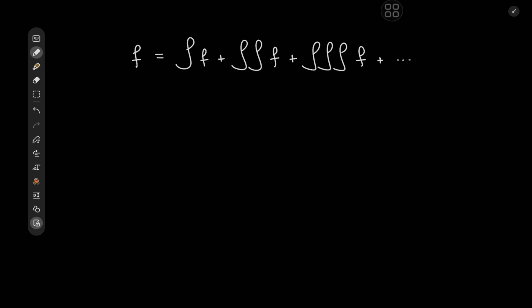Greetings and welcome back. This is your boy Kamal once again and today we're gonna do some math for fun. We have this really interesting integral equation where we're searching for a function f such that f equals the integral of f plus the double integral of f plus the triple integral of f and so on and so forth, where each integration is of course being carried out with respect to x. So we have this infinite order integral equation, which does seem pretty interesting — but how are we to approach this?